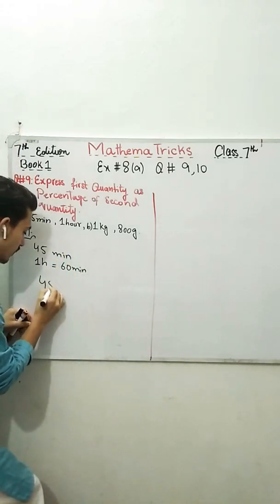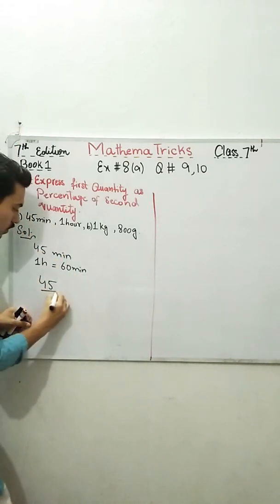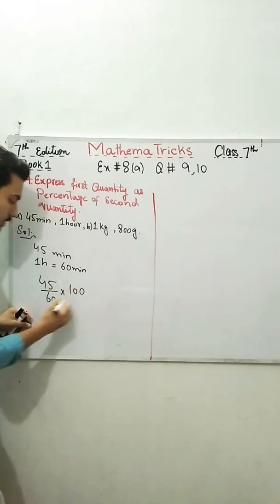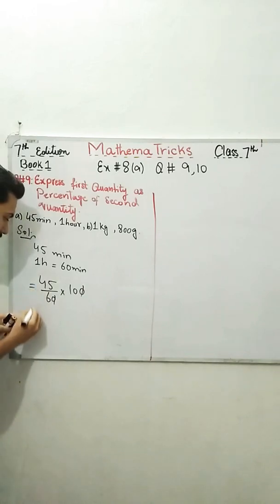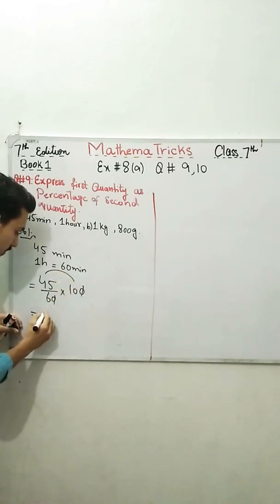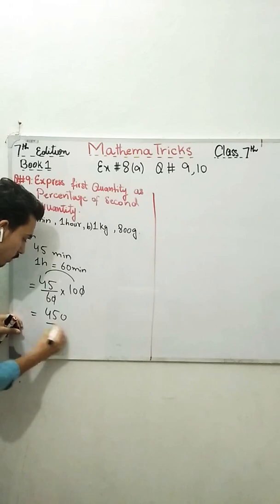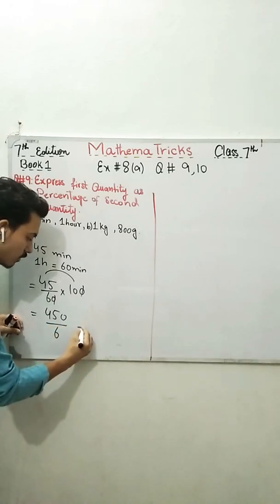What I need to do, how to get the percentage of first quantity as of second? I need to present 45, first, over second, 60, multiply by 100. What I got? 450, because 45 times, 450 divided by 6.